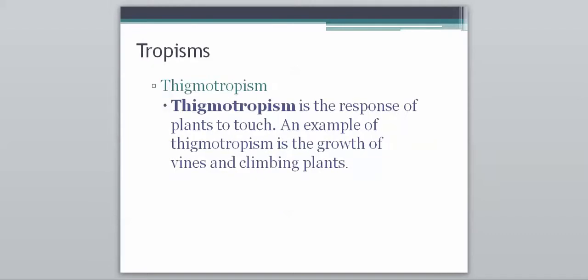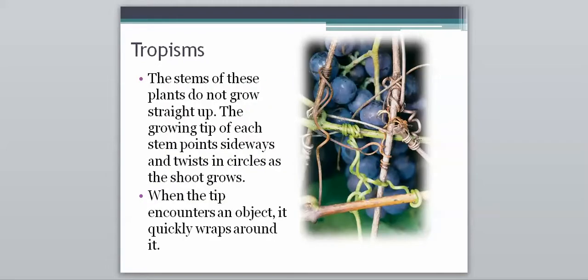Our next one, a new one that we haven't really heard of yet, would be thigmotropism. And this is the response of a plant to touch. An example of thigmotropism is the growth of vines and climbing plants. And so kind of how this works is that the stems of these plants do not grow straight up. Instead, the growing tip of each stem will point sideways, and it twists in circles as the shoot grows. If you look over in that picture on the right, you can see the twisting stem that's going around. And when the tip will encounter a nodule, it quickly wraps around it, which will allow it to keep moving its way up and up and up on whatever it's climbing.